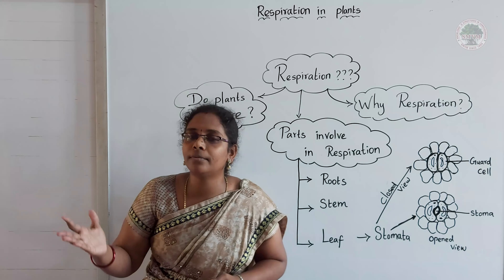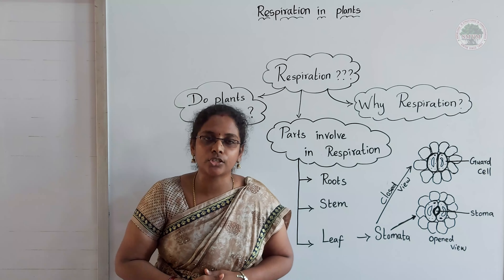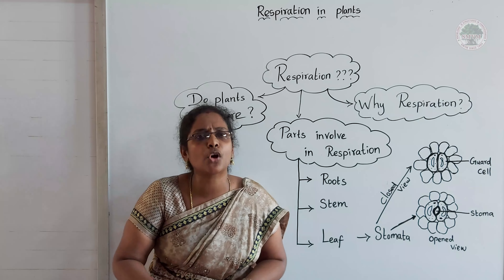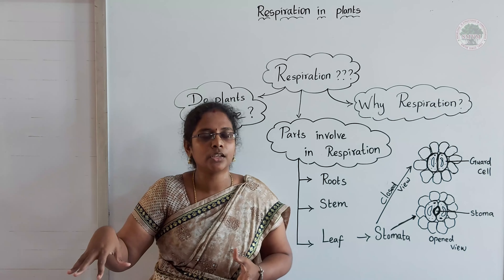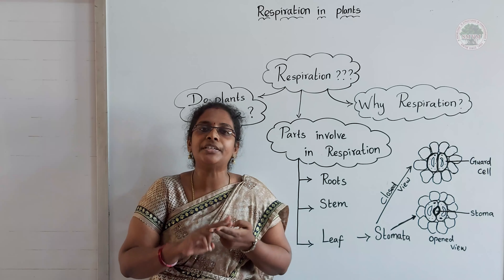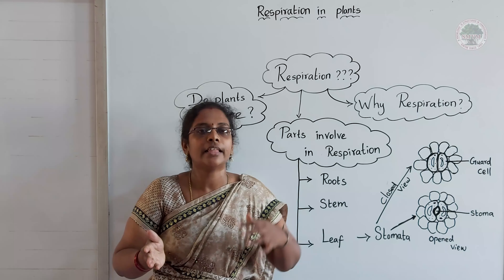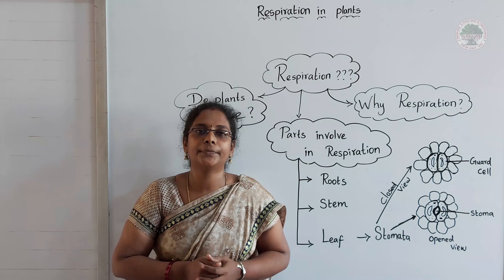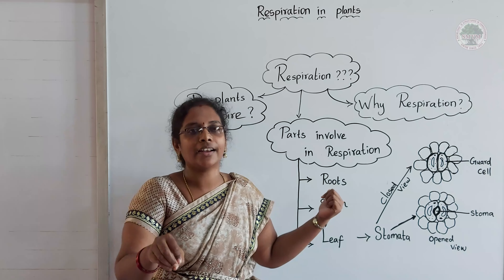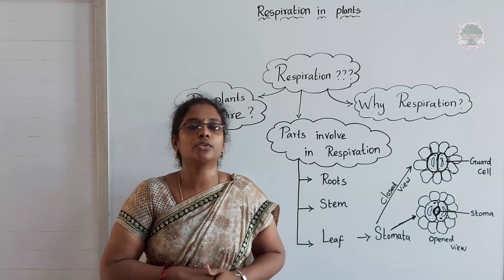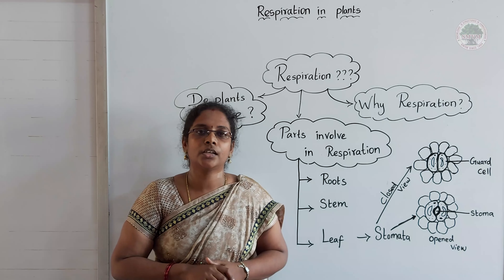Whenever farmers plant or sow any seed, they prepare the soil first. Why? While they prepare the soil, they loosen it up. When the soil is loosened, the gap between soil particles increases. When the gap increases, air can go inside and fill those gaps. The roots then utilize that oxygen and can respire. That's why farmers prepare soil before they sow seeds.